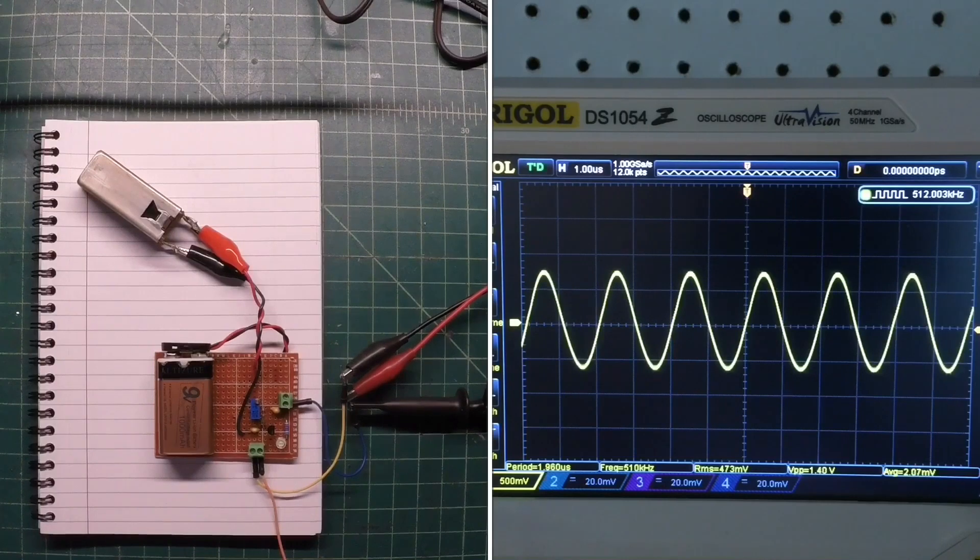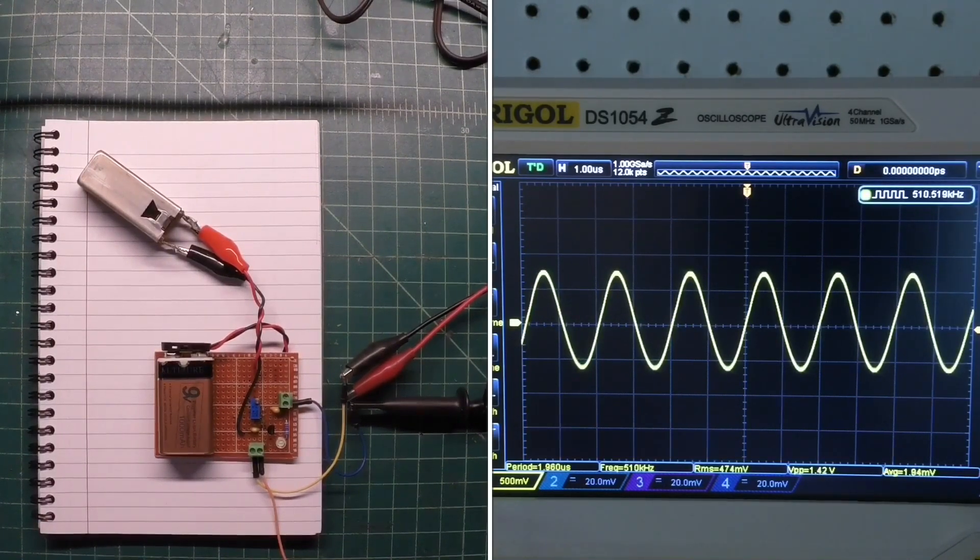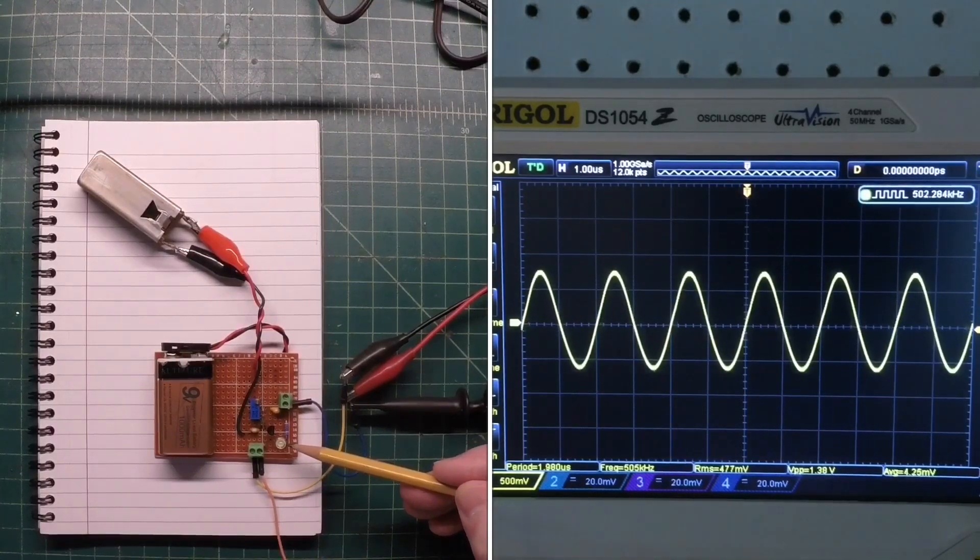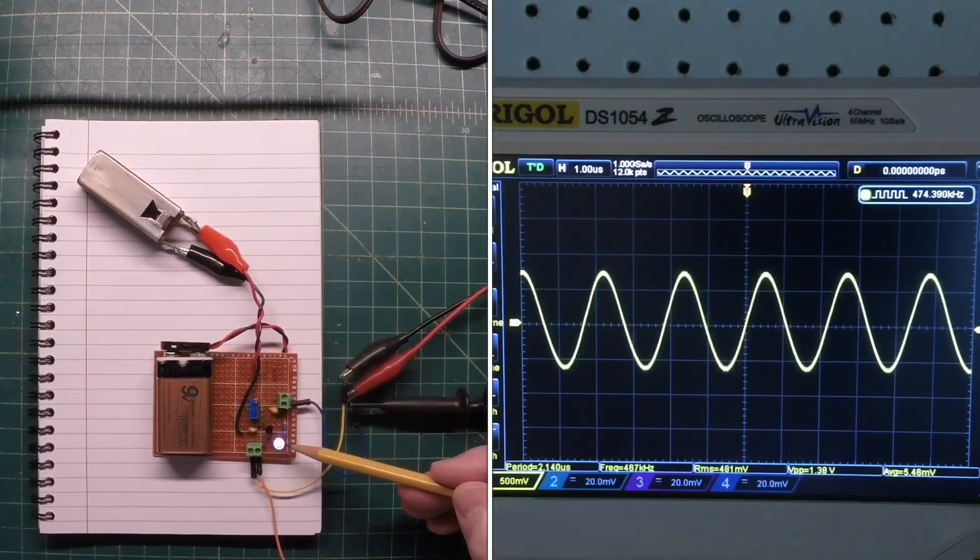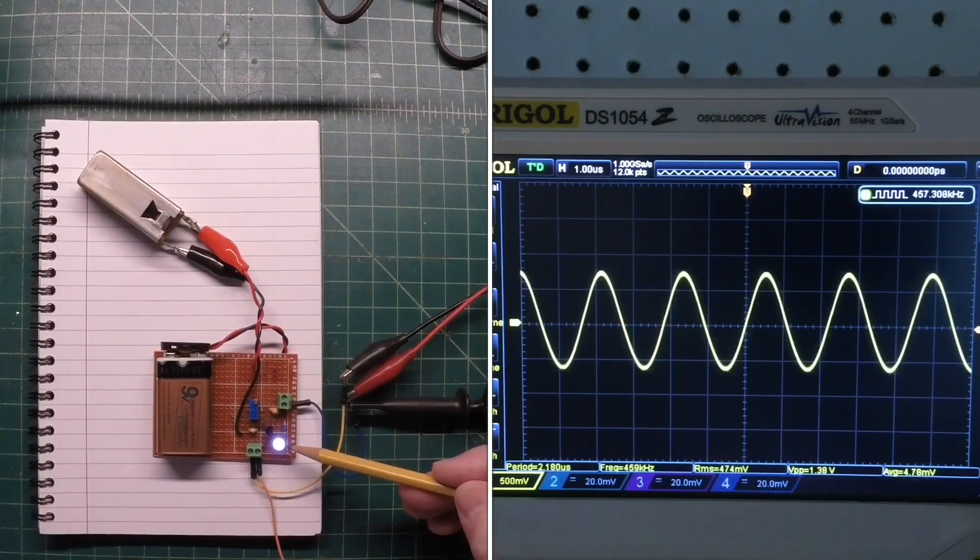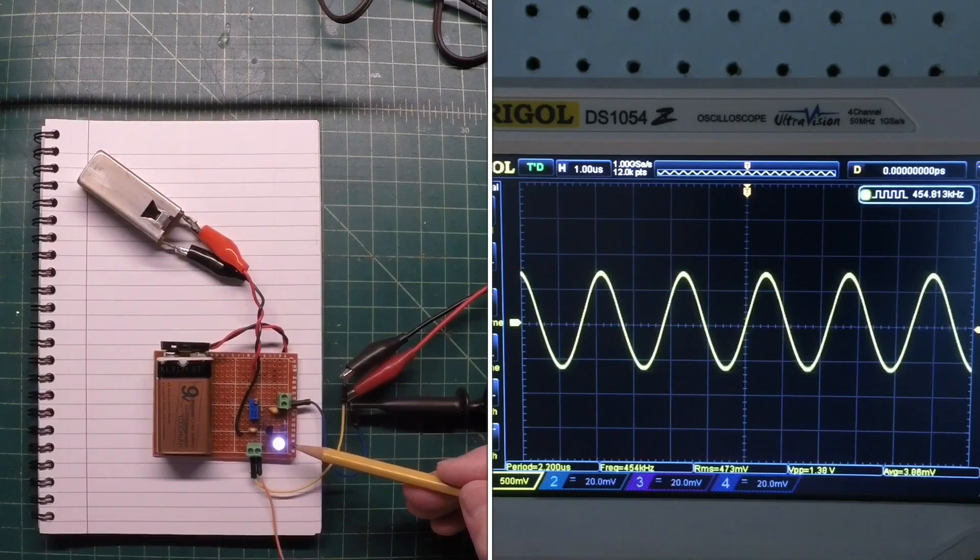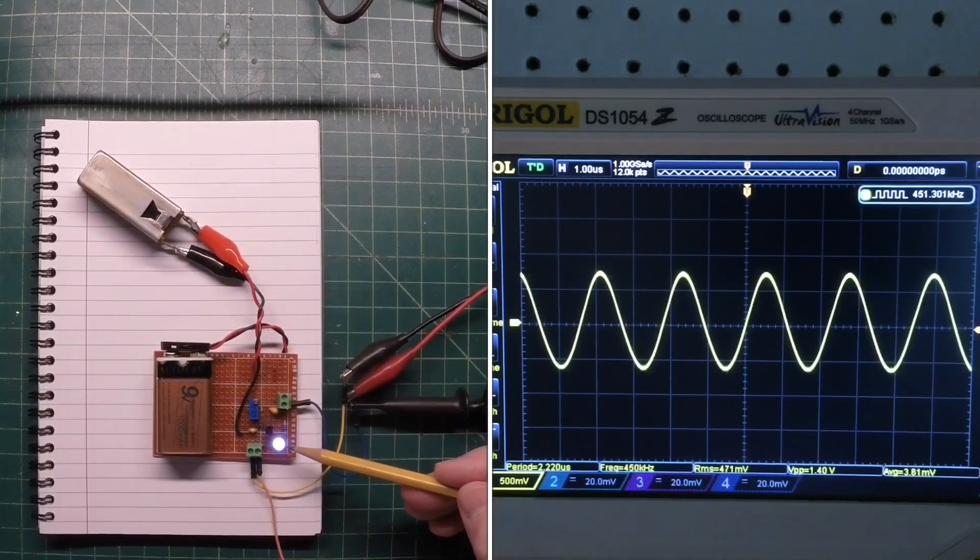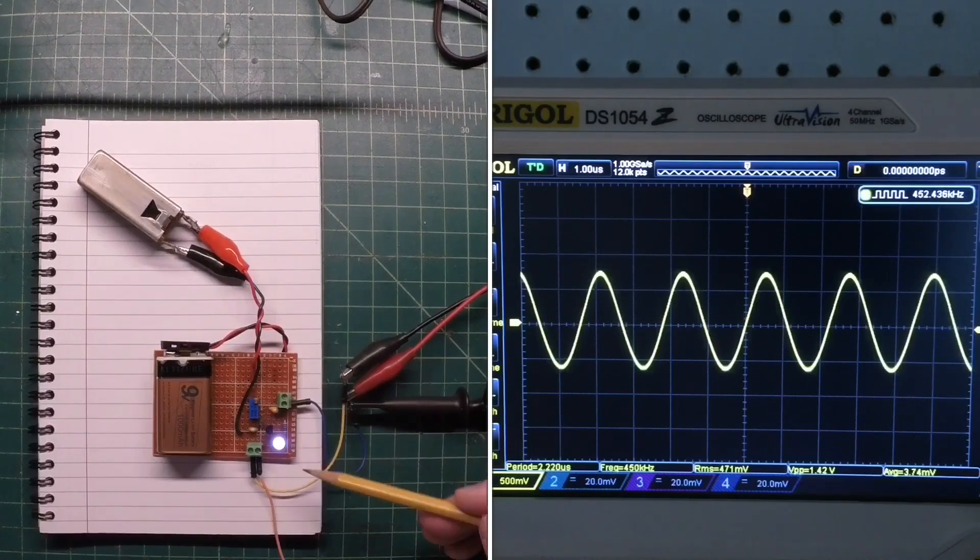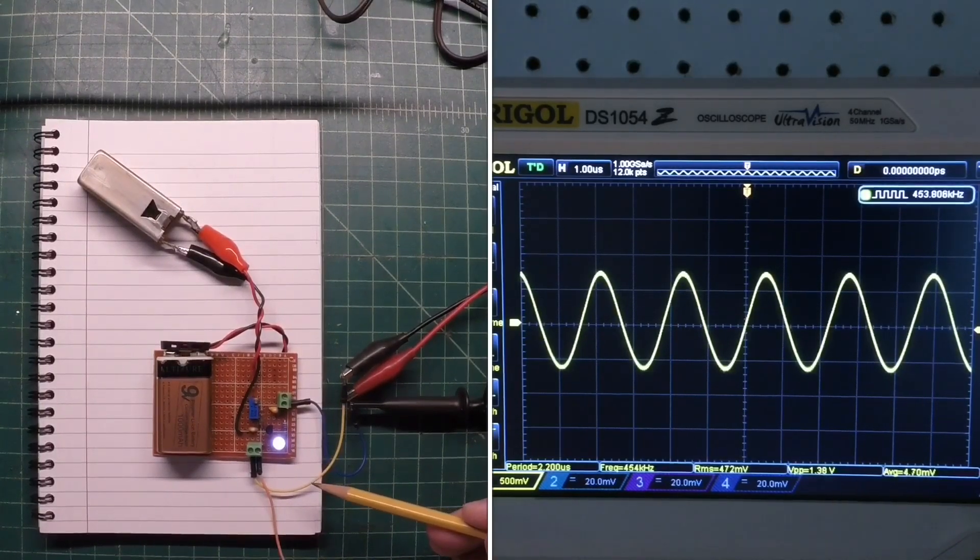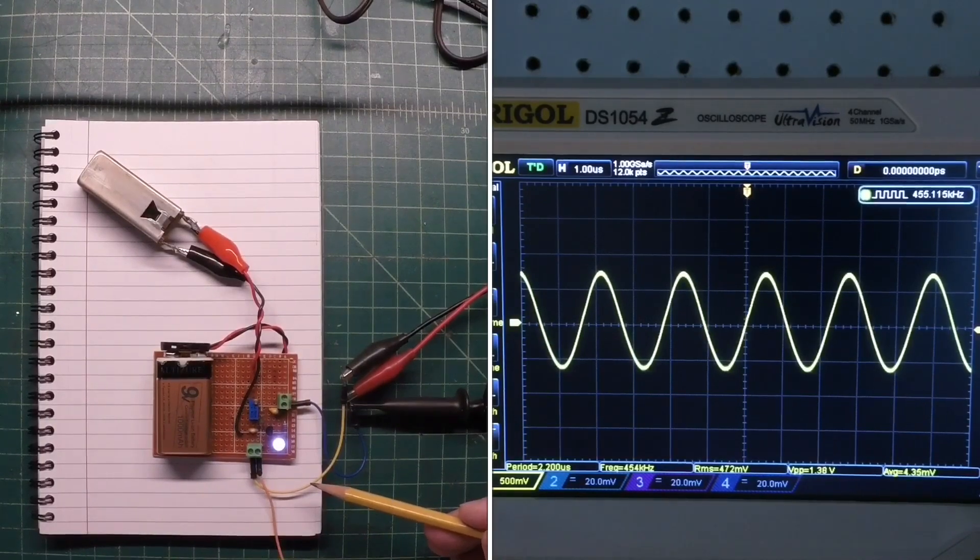So let me just rotate my RF signal generator here and keep an eye here on the LED. You can see the way I built the circuit, the LED will illuminate when we get in close proximity to the IF frequency itself.